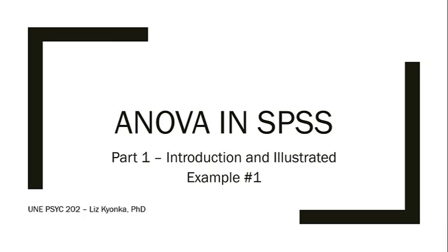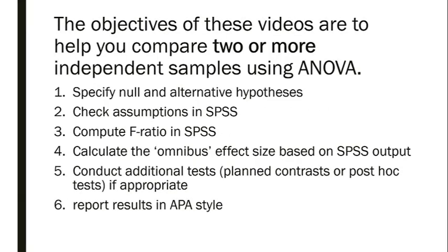This is Analysis of Variance, or ANOVA, in SPSS. This tutorial is divided into three parts. During parts one and two we're going to cover one example, and then in part three, which will hopefully be a little bit shorter, we're going to go over a second example. The objectives of these three videos are to help you compare two or more independent samples using analysis of variance.